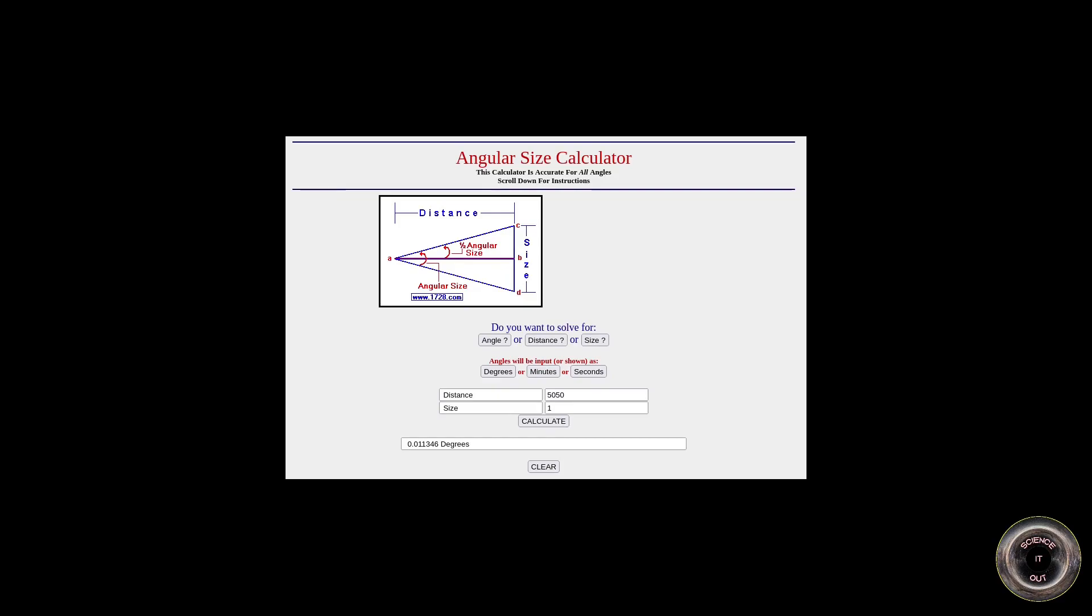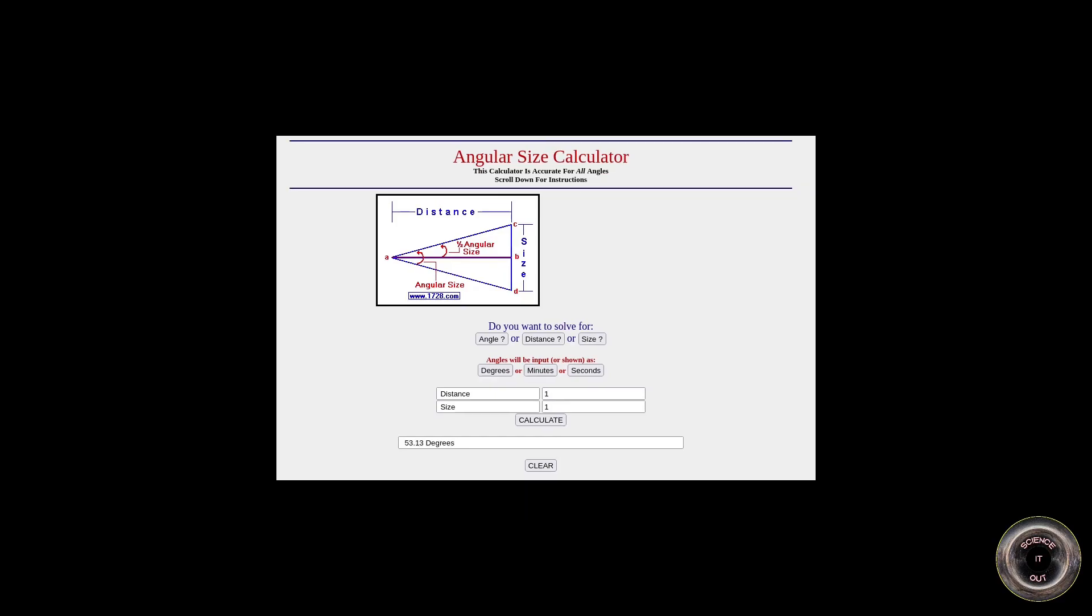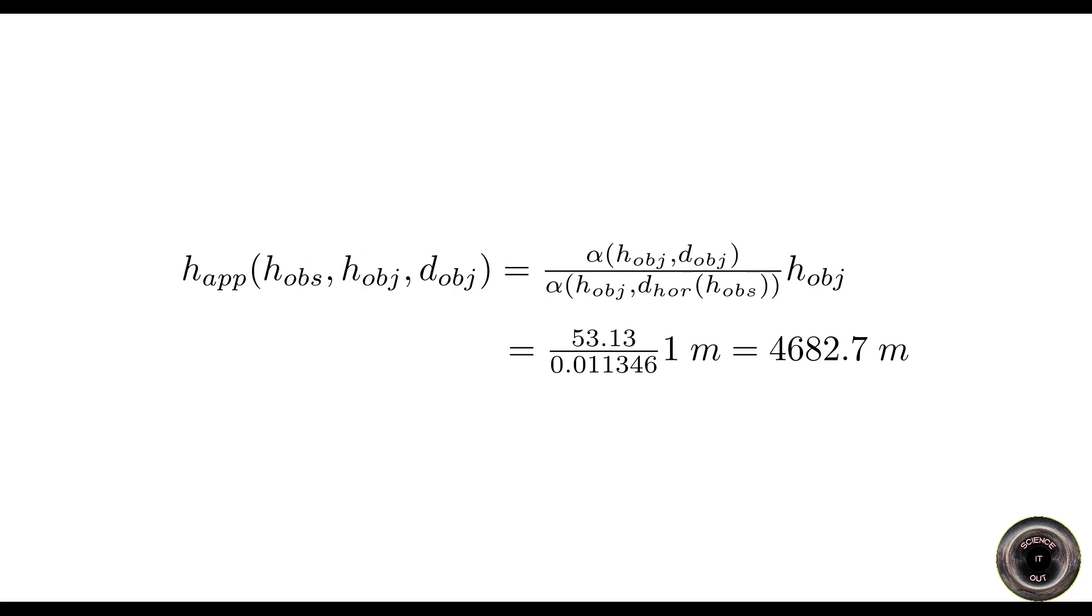At the distance of 1 meter from the observer, the angular size is 53.13 degrees. So let's put that into Taboo Conspiracy's formula, and we get that the apparent height of a 1 meter stick, that is 1 meter from the observer, at height of 2 meters, is almost 5 kilometers, 4.682 to be precise.